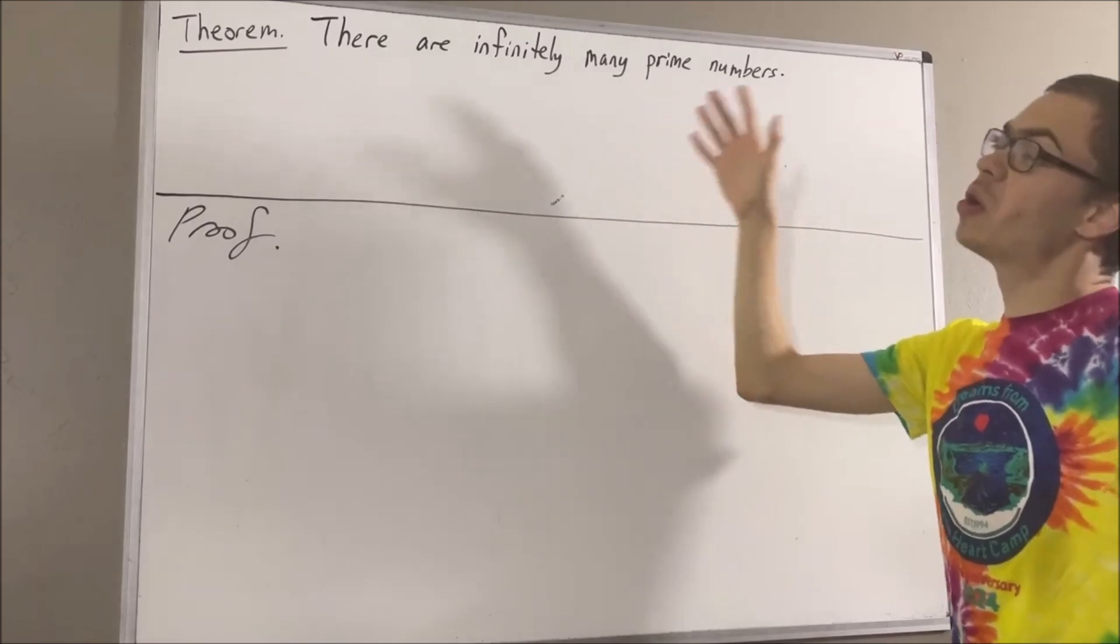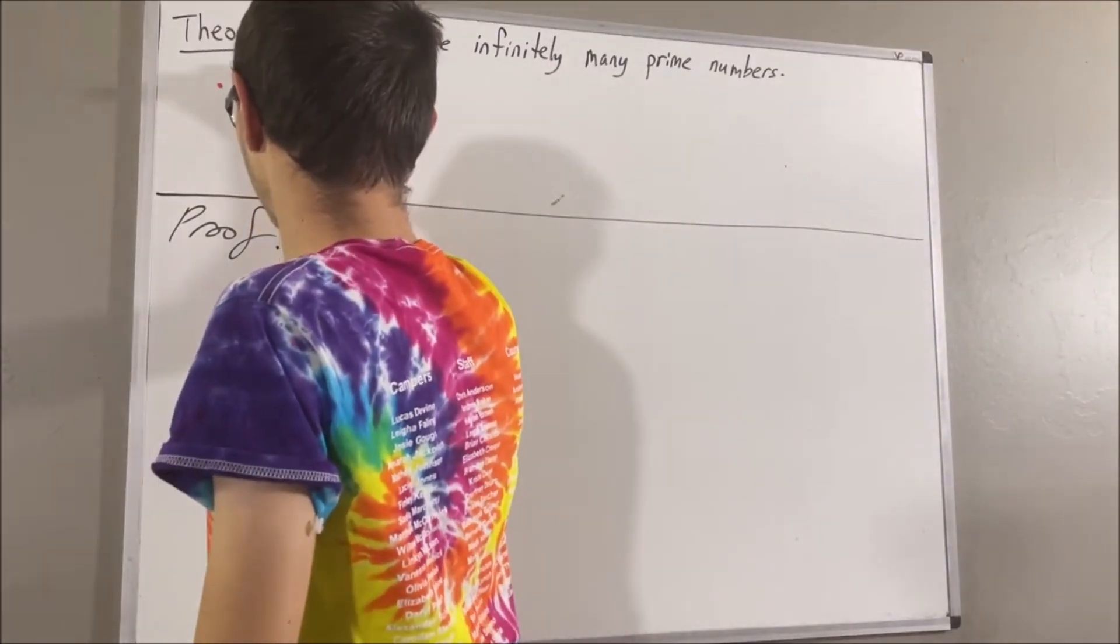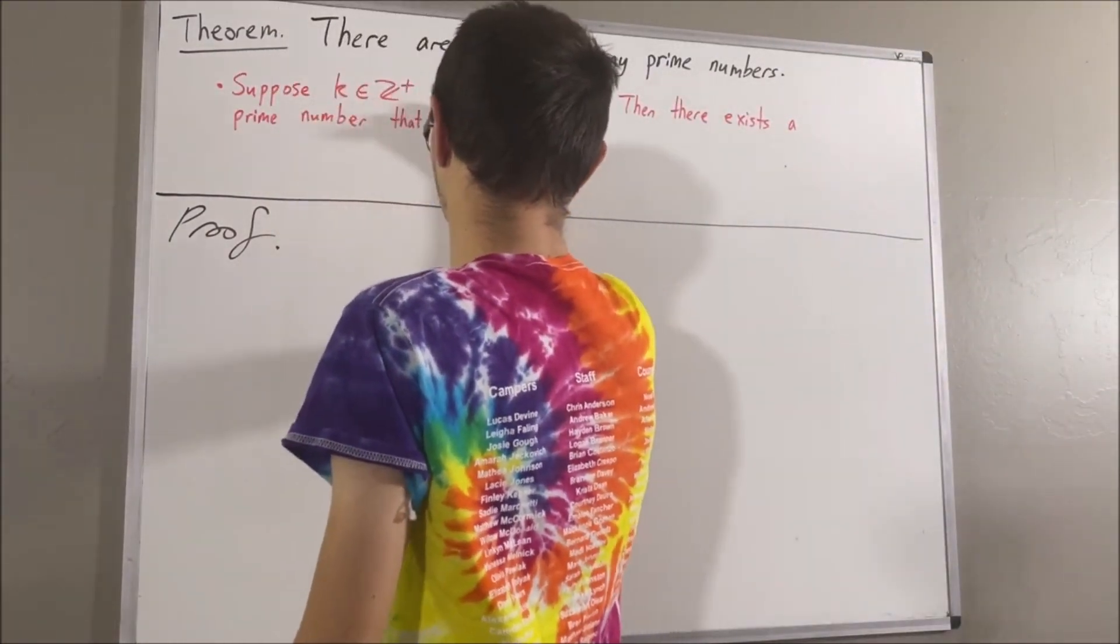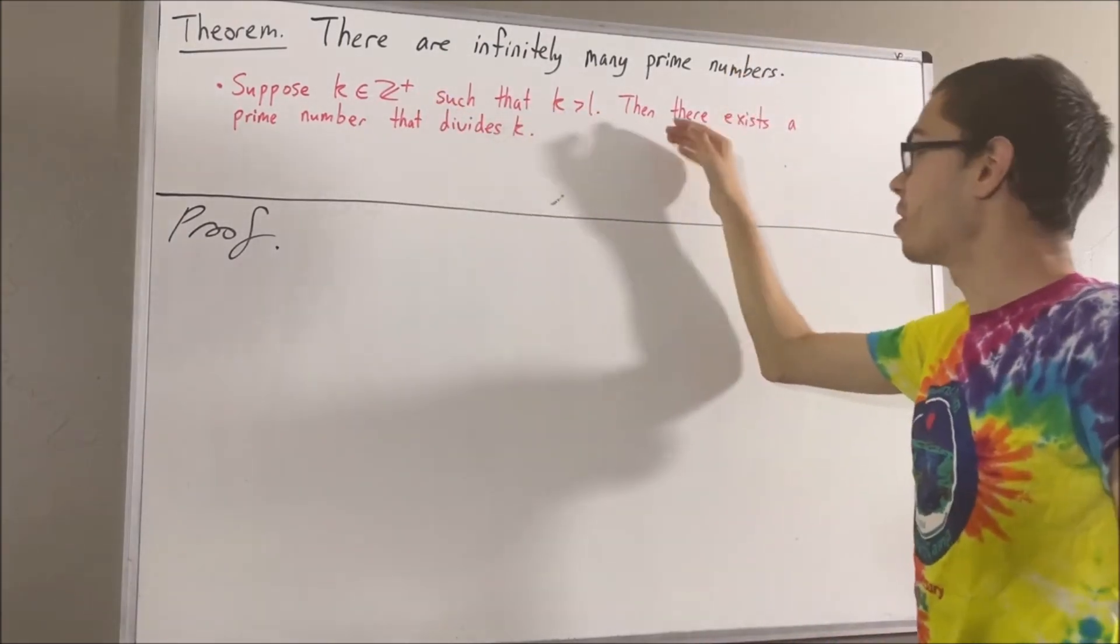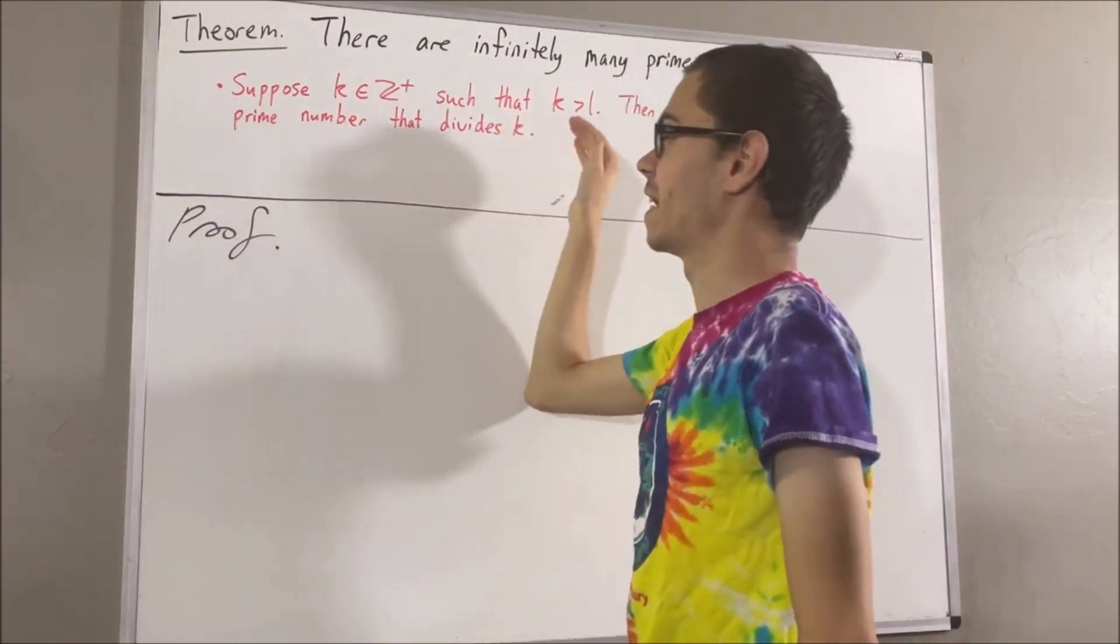Now, in proving this theorem, we are going to use the following fact regarding prime numbers. Suppose k is a positive integer such that k is greater than 1. Then there exists a prime number that divides k.